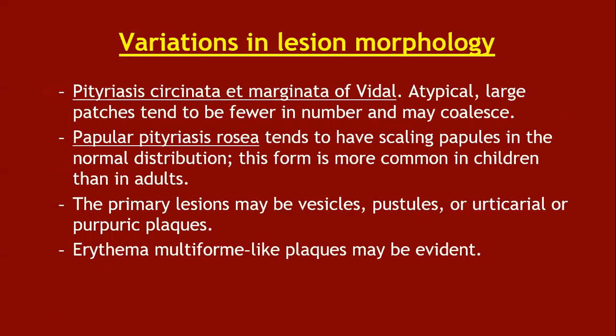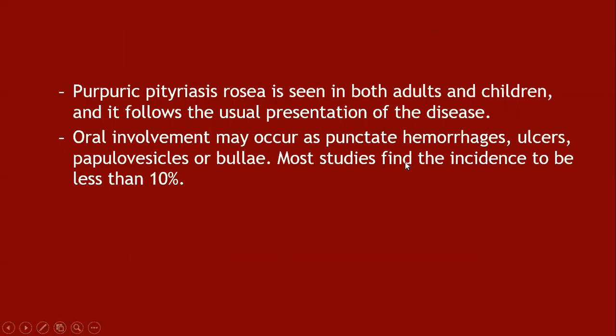Variations in lesion morphology include pityriasis circinata et marginata of Vidal, an atypical form with large patches that tend to be fewer in number and may coalesce. Papular pityriasis rosea can also occur with scaly papules in the normal distribution, more common in children than adults. Primary lesions can be vesicular, pustular, urticarial, or purpuric; erythema multiforme-like plaques are also reported. Purpuric pityriasis rosea is seen in both adults and children. Oral involvement may occur as punctate hemorrhages, ulcers, or papulovesicles, with less than 10% involvement of the oral mucosa.